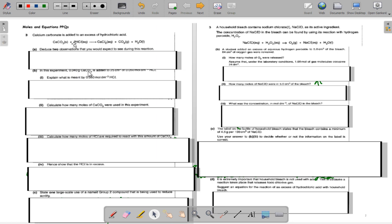0.04 grams of calcium carbonate is added to 25 cm³ of 0.05 moles per decimeter cubed of hydrochloric acid. We need to explain what is meant by the concentration of hydrochloric acid, explain how many moles of calcium carbonate we used during the experiment, calculate how many moles of HCl are required to react through this amount of calcium carbonate, and show that hydrochloric acid is in excess. We also need to find one large scale use of a Group 2 compound that is being used to reduce acidity in something.